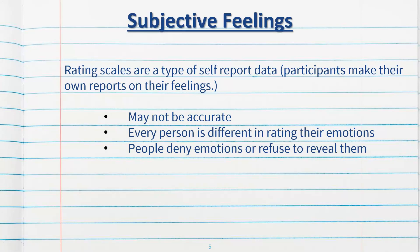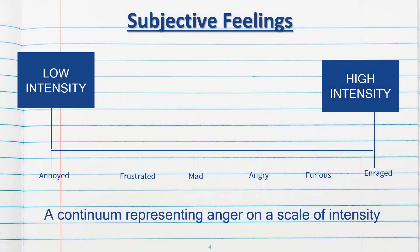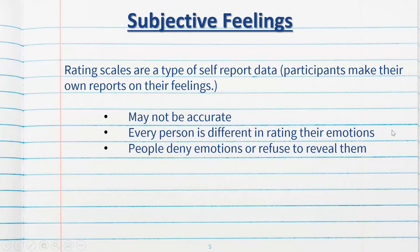Rating scales are a type of self-report data, meaning participants make their own reports on their feelings. People may be asked to circle or rate whereabouts they feel regarding a particular event or how they're feeling at that particular time. Sometimes it will be a different scale — a scale of one to ten, with one being not mad at all through to ten being absolutely furious and enraged — but it's all the same type of method. It is a subjective method of measuring the intensity of one's emotion.